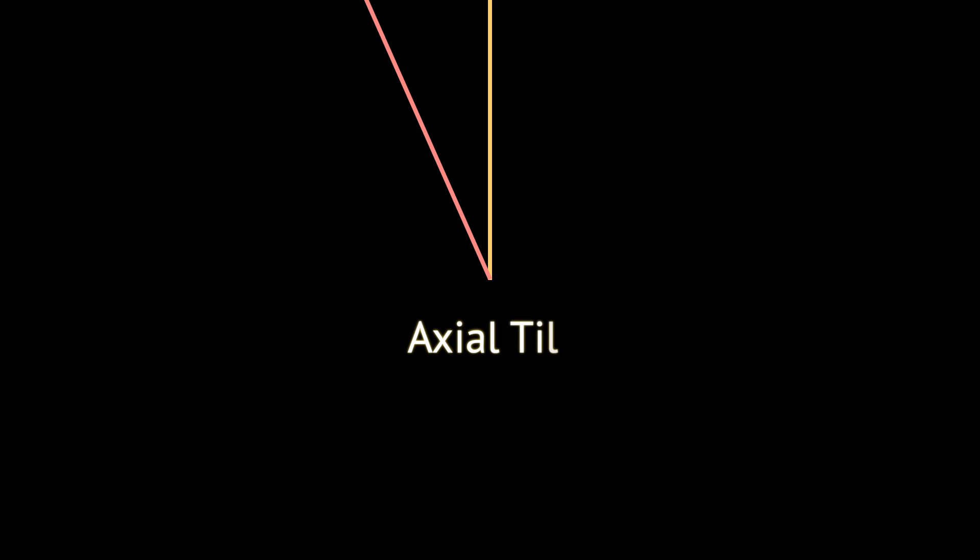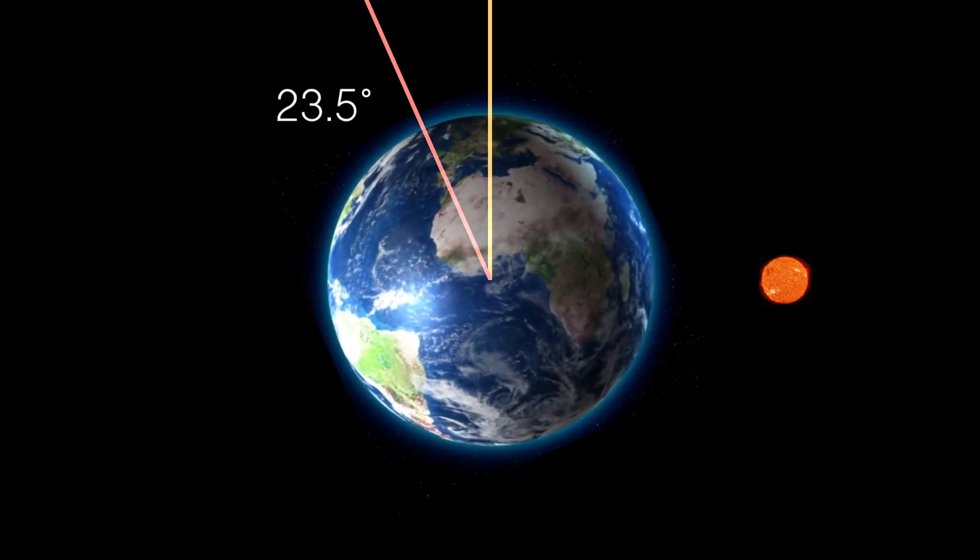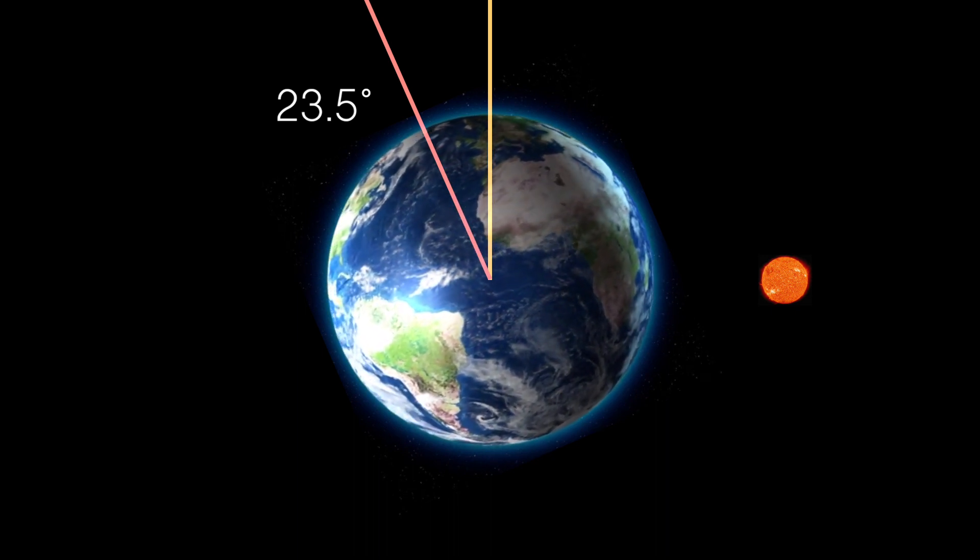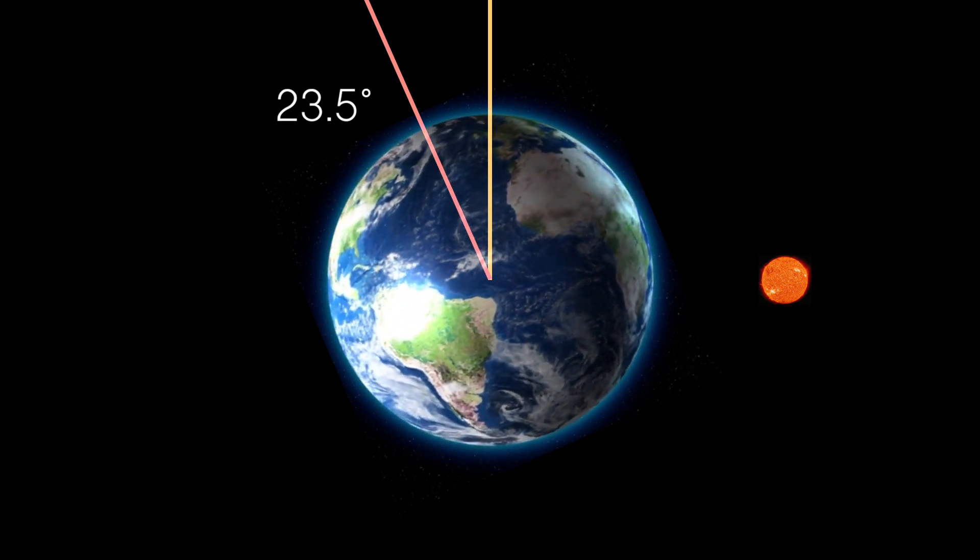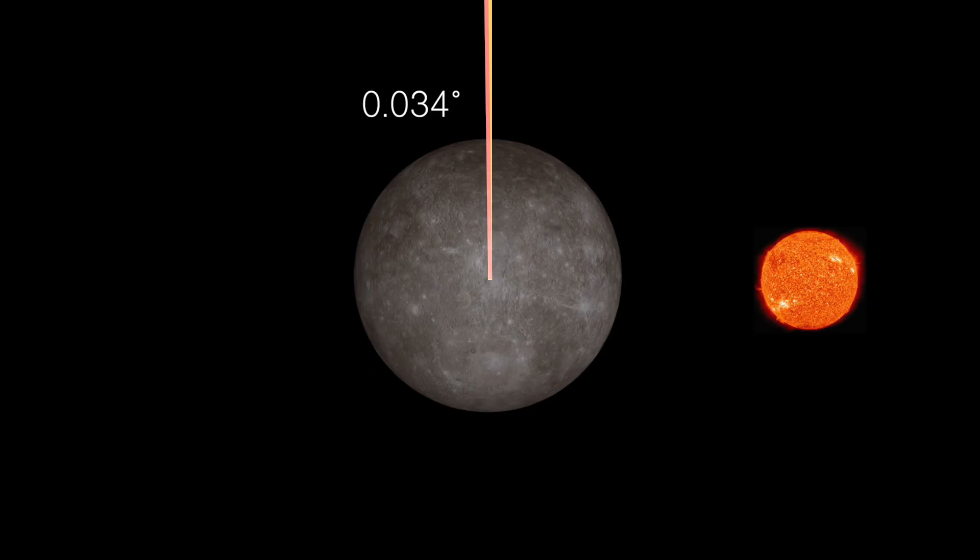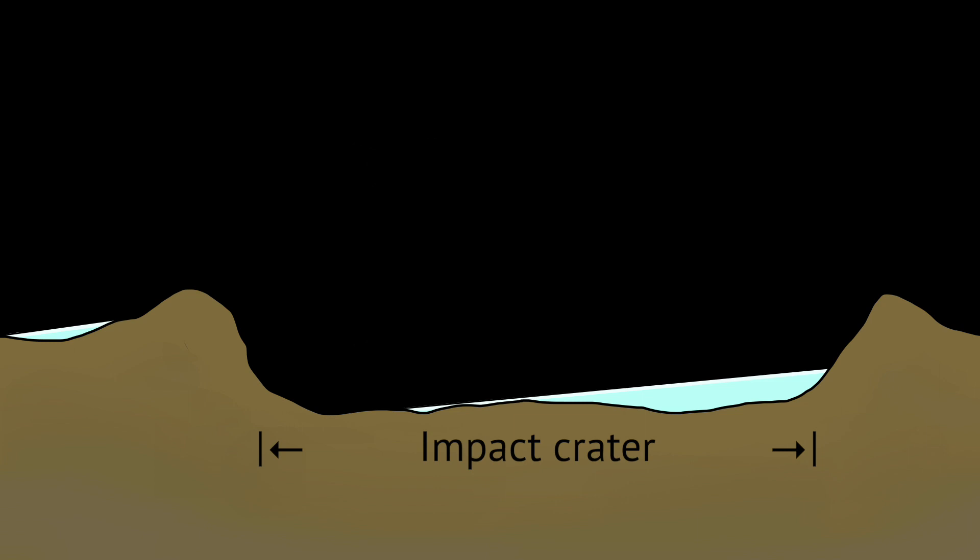As it turns out, there is a straightforward explanation for this phenomenon. It's related to the axial tilt of Mercury. On Earth, this tilt is around 23 degrees. It's responsible for our seasons. Mercury has a very gentle tilt. As a result, there are patches at each pole where sunlight never reaches, no matter what time of year it is. Those patches are the bottoms of craters left by meteorite impacts. They match up exactly with sites where ice has been spotted.